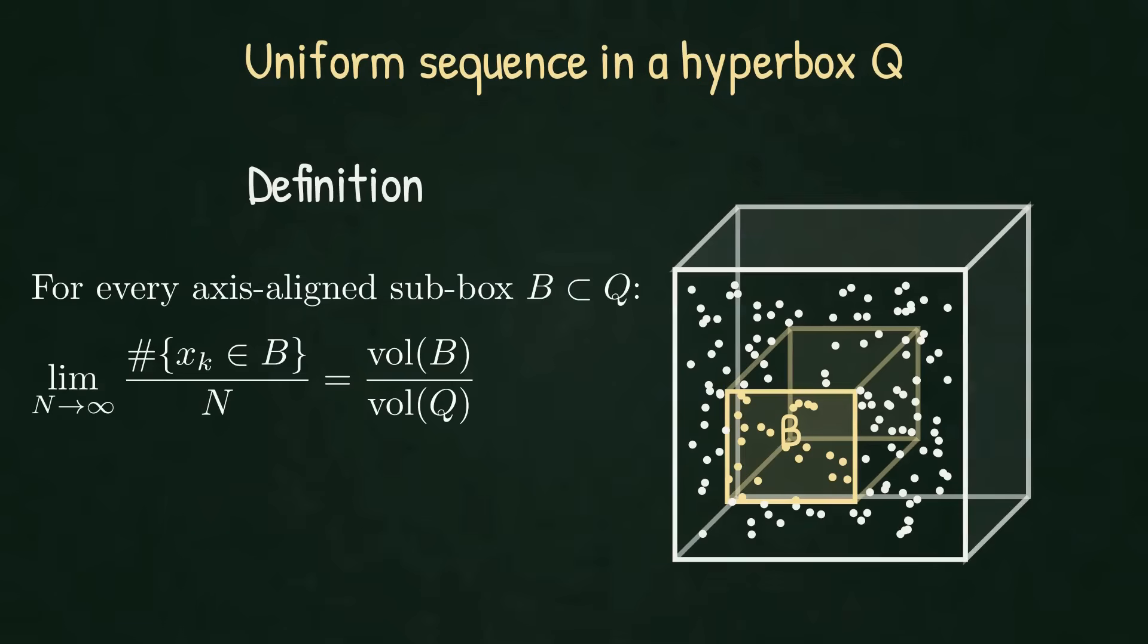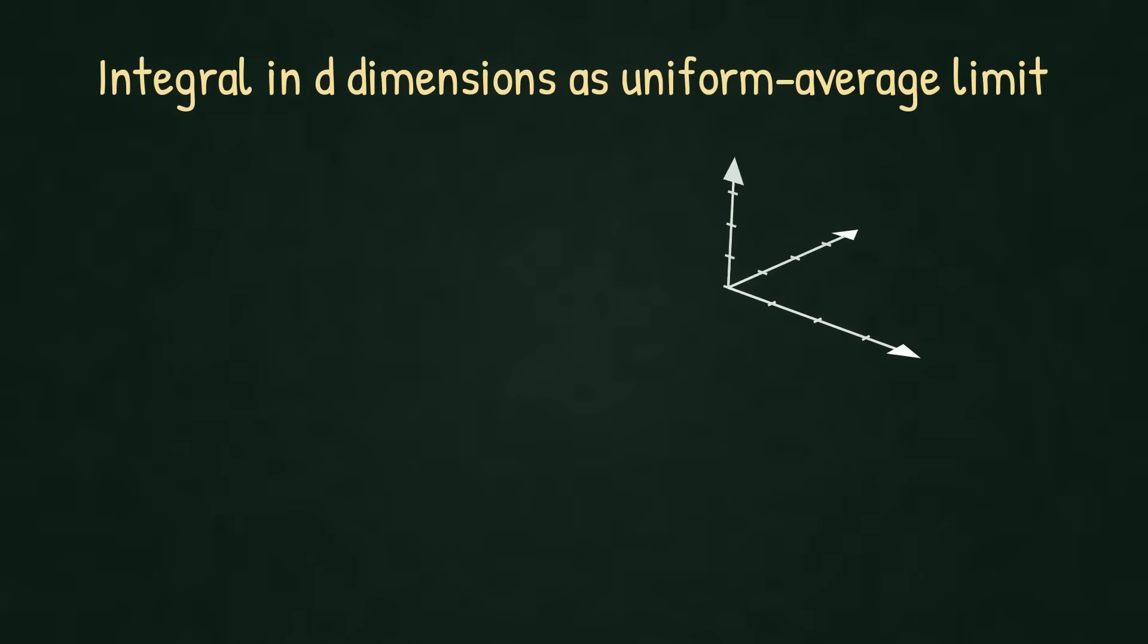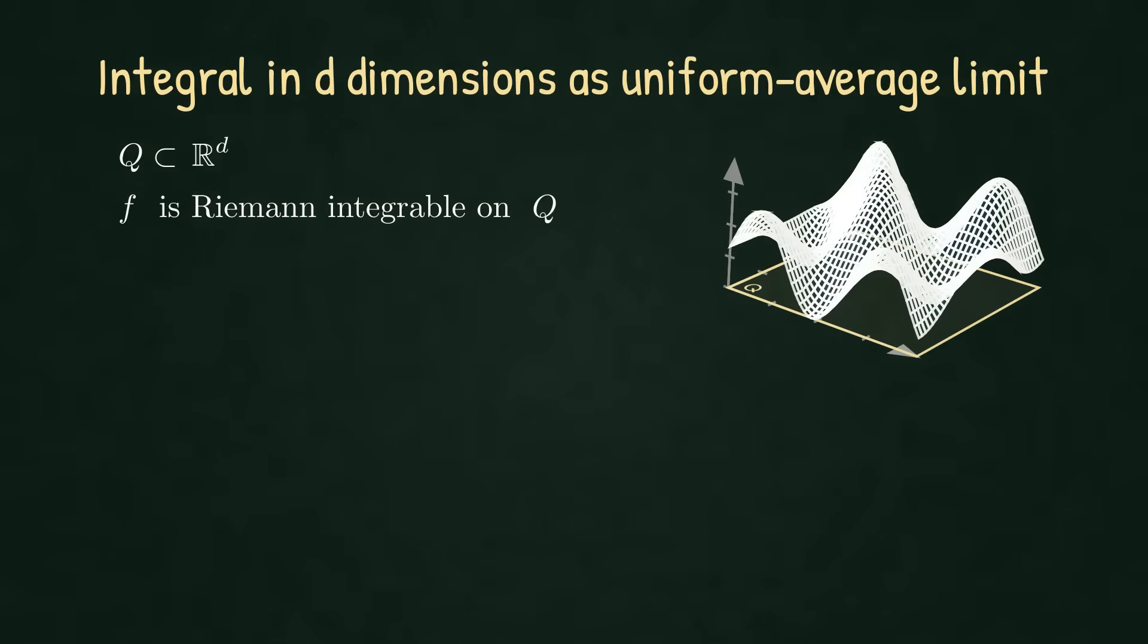With this definition in place, our evaluate and average viewpoint extends to D-dimensions without changing the core idea. We now collect everything into a single statement. Let Q be our hyperbox.